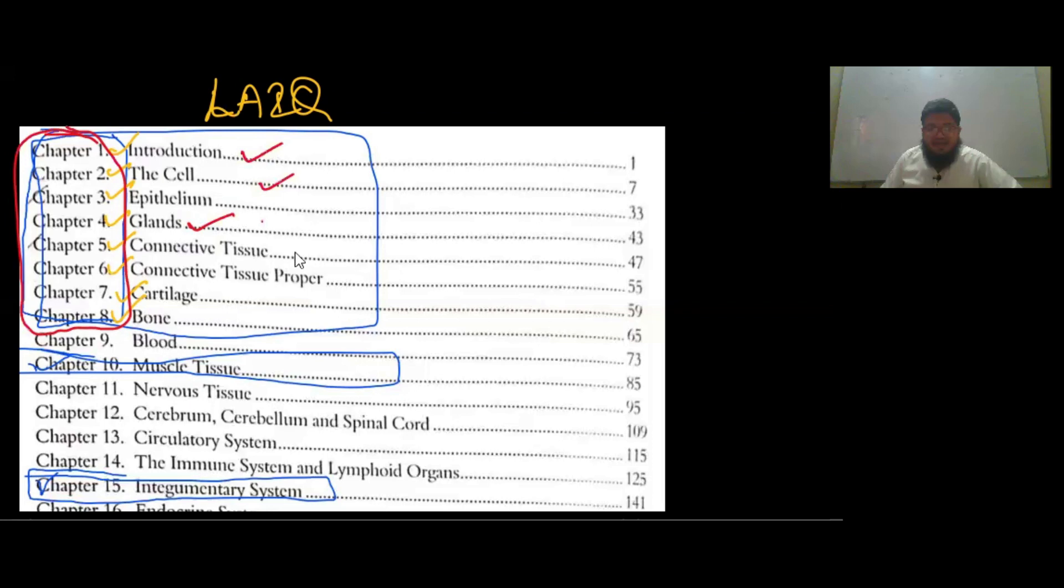Histology is a good place to start from: the intro, cell, epithelium, etc. Then this muscular tissue part also needs to be covered. Chapter 10, blood, is not included in foundation module because that will be covered during the blood module. Nervous tissue, cerebrum, cerebellum, and spinal cord histology are not included because these are in the second year's first module, neuroscience. Circulatory system not included—this is part of the CVS cardiovascular module. Immune system and lymphoid organs, again CVS. Integumentary system needs to be done—this is the skin portion.